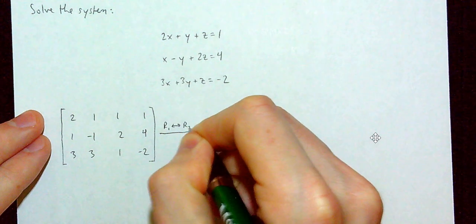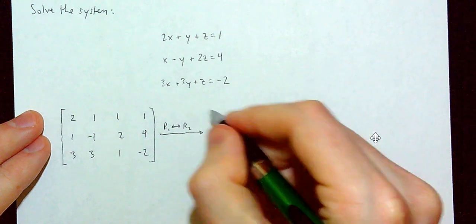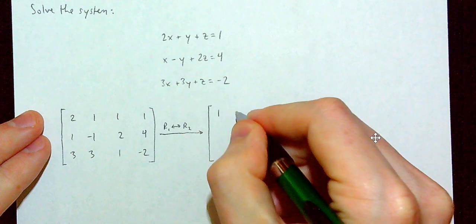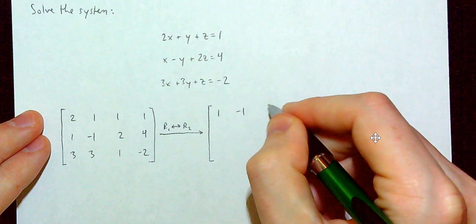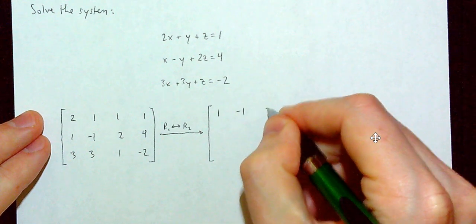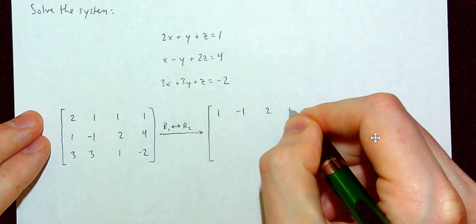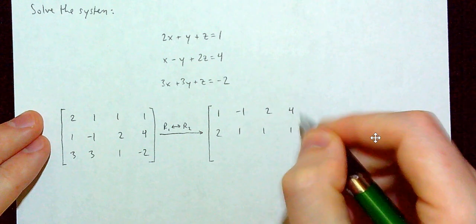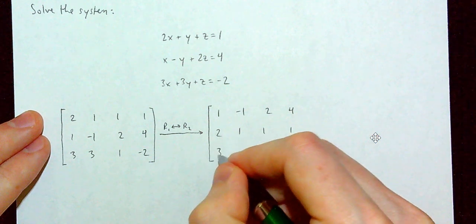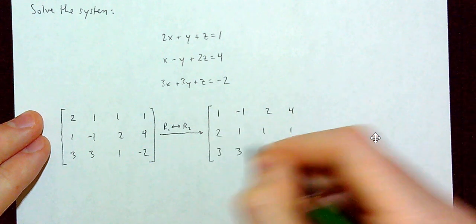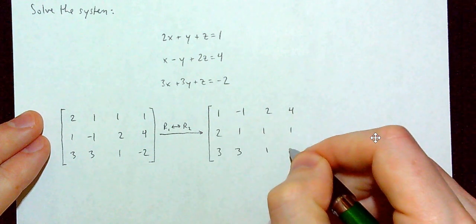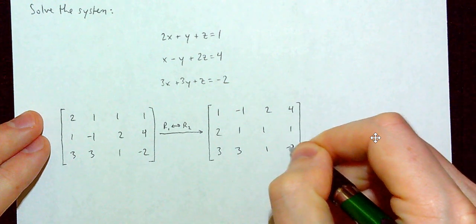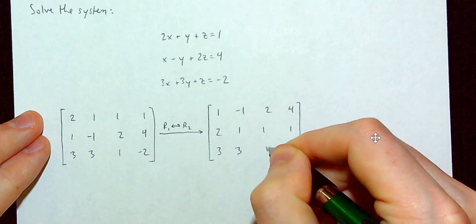After the swap: row 1 becomes 1, negative 1, 2, 4; row 2 becomes 2, 1, 1, 1; and row 3 stays as 3, 3, 1, negative 2. Now I need the 2 and the 3 in the first column to become zeros.